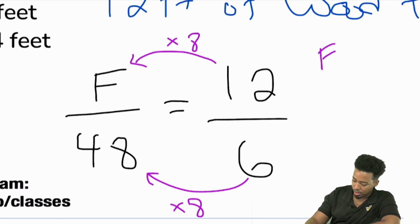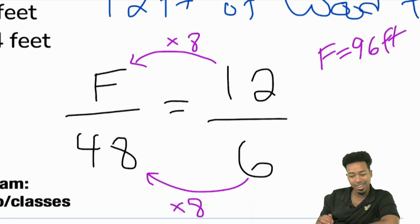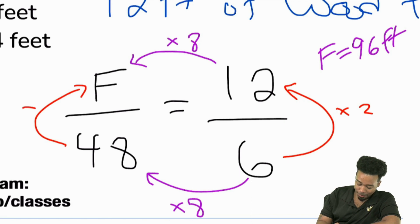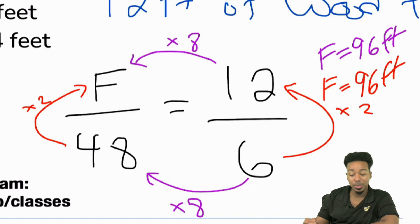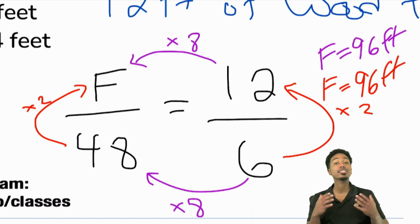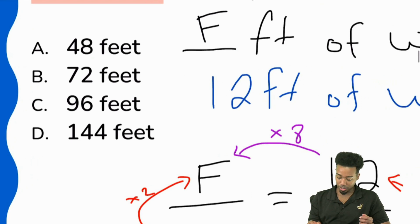You can also do it this way. Look at this, you can also go from 6 to 12, that's times 2, that's just doubling. So you can do 48 to f, that's times 2. What's 48 times 2? 96 again. F equals 96 feet. You can get the same answer the right way both times. It really does depend on your setup. If you would have accidentally swapped the 6 and the 12, you would have thought the answer was 24 or 48, but no, the answer is 96, 96 feet.